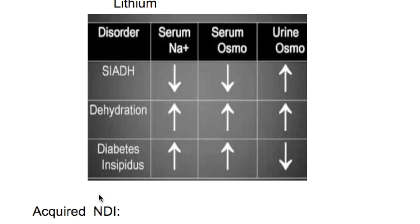The difference between dehydration and diabetes insipidus: in both conditions serum sodium is high, whereas urine osmolality is high in dehydration and reduced in diabetes insipidus.